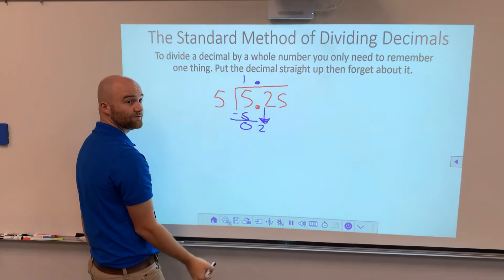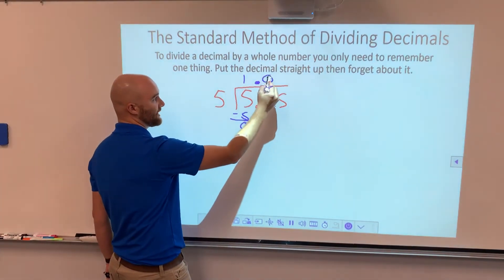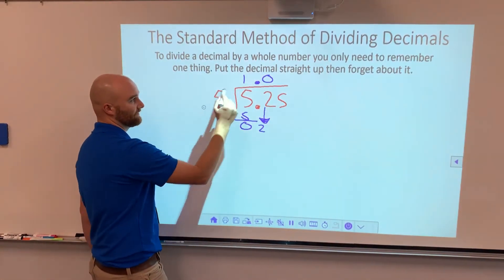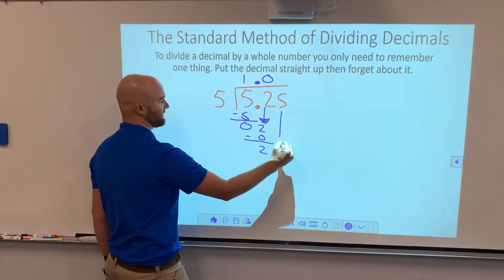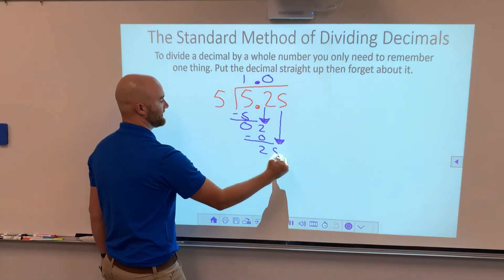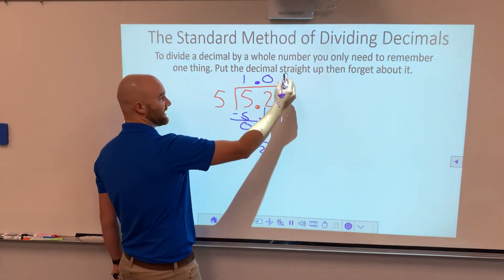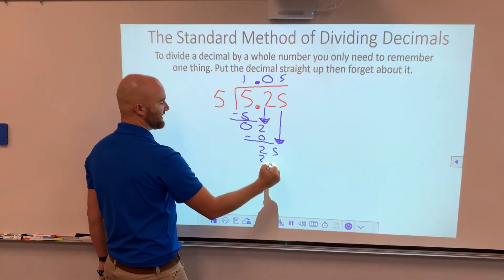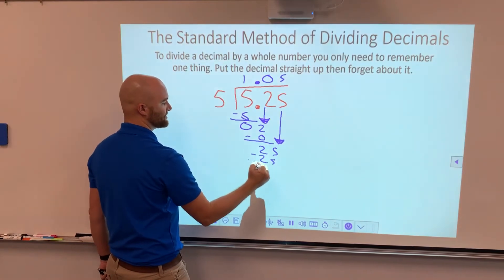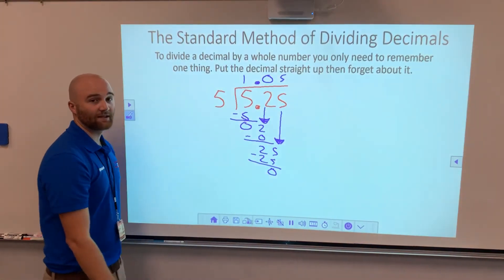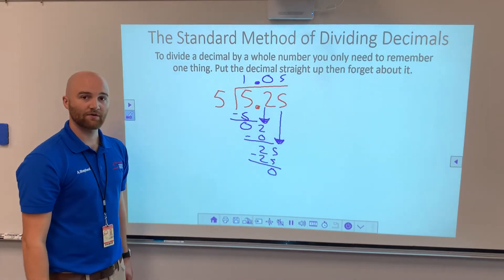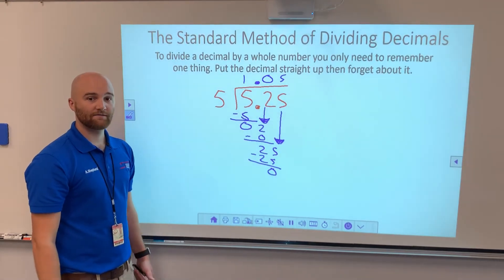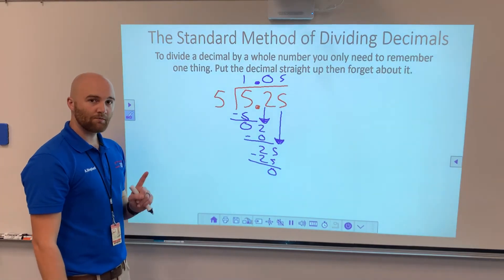5 goes into 2 zero times. So I have to make sure I write that 0 in there. Don't just skip to the next part. 5 times 0 gives me 0. I do my subtraction. I have a 2 here. I bring the 5 down. 5 goes into 25 a total of 5 times. 5 times 5 is 25. I do my subtraction. And I've got nothing left to bring down and a 0. Which means that our answer is 1.05 or 1 and 5 hundredths. Let's try one more.